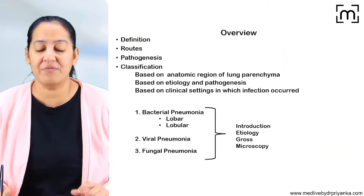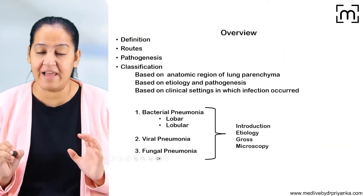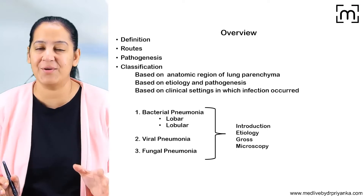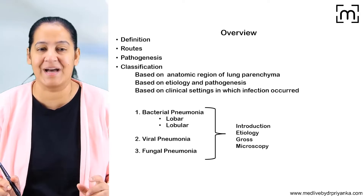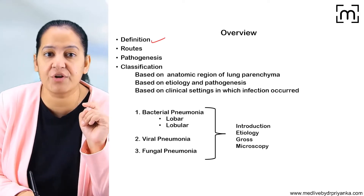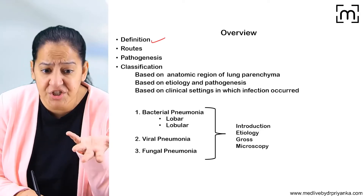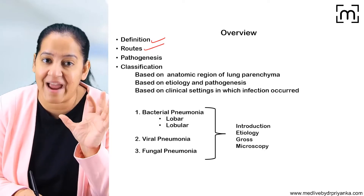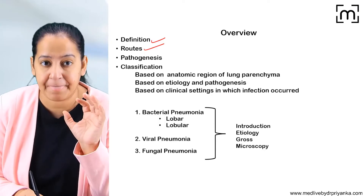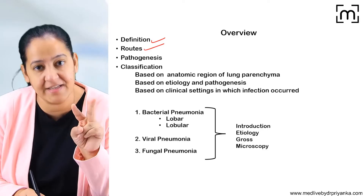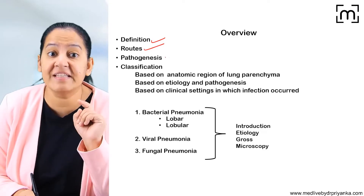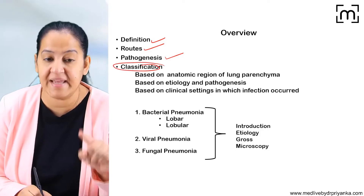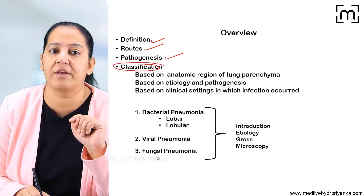Pneumonias. First of all, I would like to give you the overview — the headings under which I am going to discuss this topic so that you can frame your answer very smoothly in the exam. First I will give you the definition of pneumonia. Then we will see the routes by which the organism enters the lung and reaches inside the respiratory tract. Then we will see the pathogenesis. Then, most importantly, we will see the classification. You very frequently get a separate question on the classification of pneumonia.